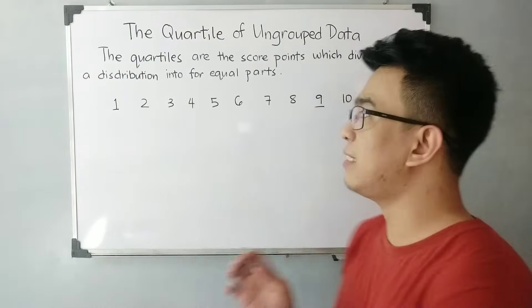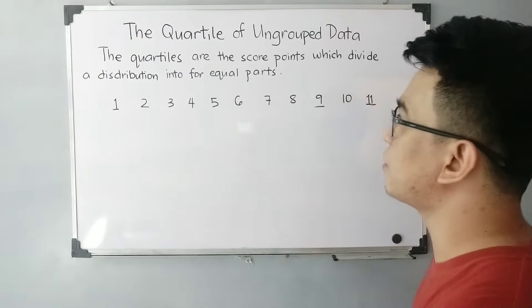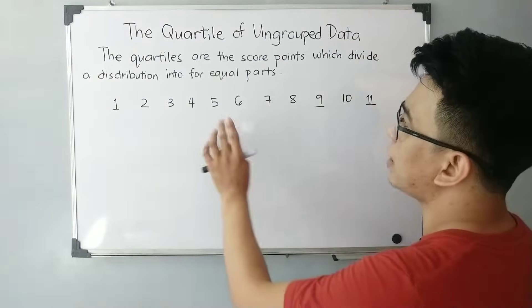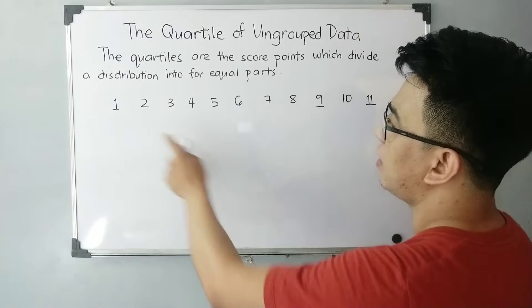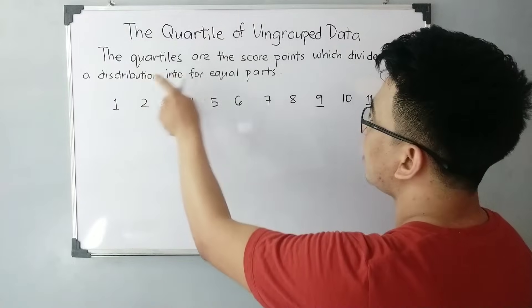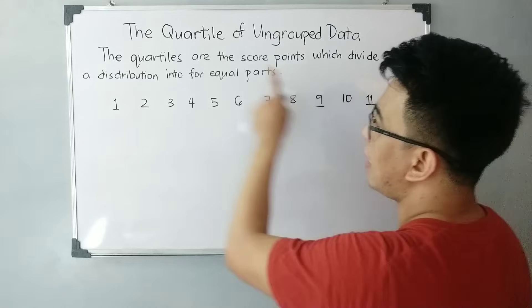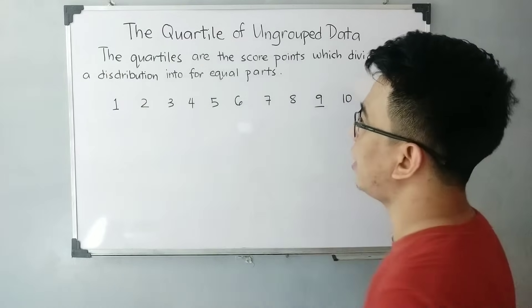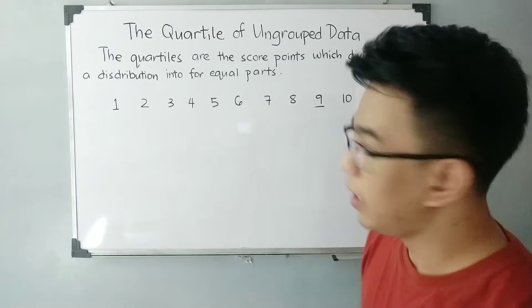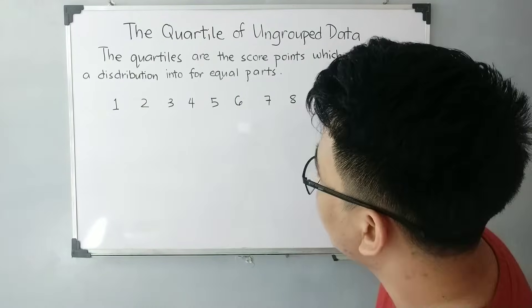Now basically, let's define first what is meant by quartile. The quartiles are the score points which divide a distribution into four equal parts.